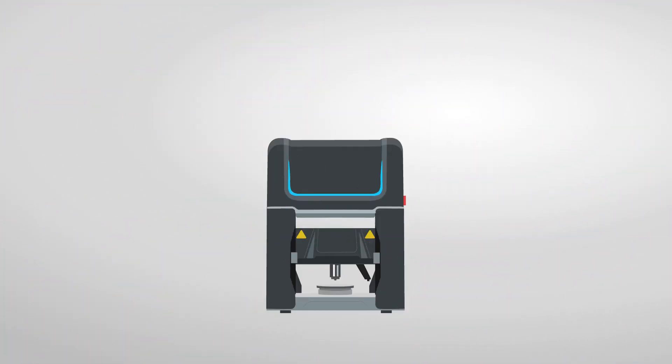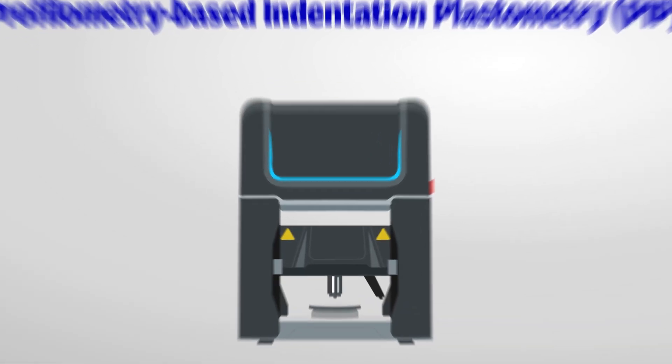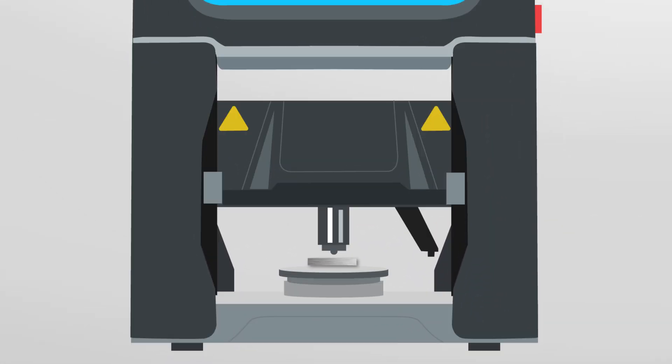To assess these variations, researchers use a technique named profilometry-based indentation plastometry, or PIP. This technique involves pressing a hard tip into a material on a flat surface and then scanning a probe across the crater to measure the shape left behind.